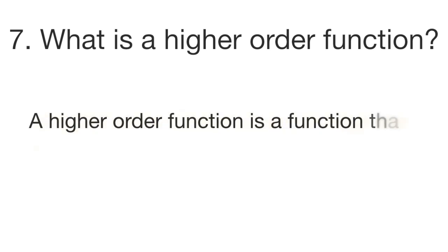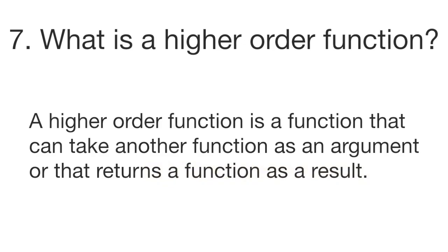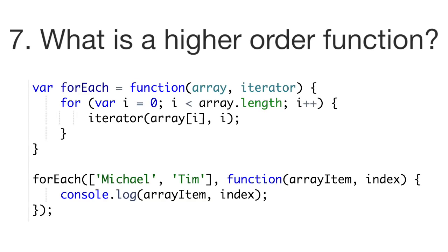Question number seven: what is a higher order function? A higher order function is a function that can take another function as an argument or that returns a function as a result. Higher order functions are a key component of functional programming, and a closure is a kind of higher order function. This example implements the native forEach method for arrays — the forEach function accepts an array and an iterator function, and the iterator is called for each item in the array, passing the value and the index.